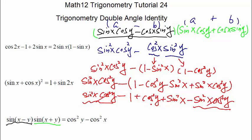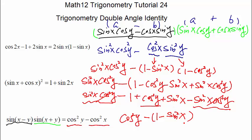We compare to the right-hand side. We have cosine²y, so we leave it. We have sine²x, but the right side uses cosine²x, so we convert: sine²x = 1 - cosine²x. Substituting: cosine²y minus 1 plus (1 - cosine²x) — factoring the negative sign gives cosine²y minus cosine²x, and we're done!